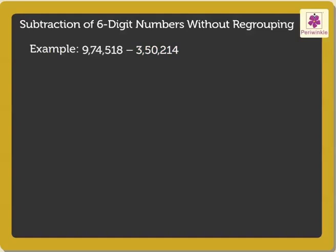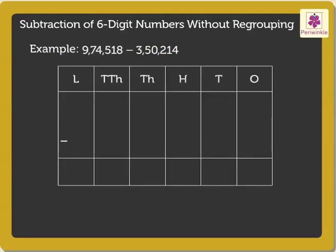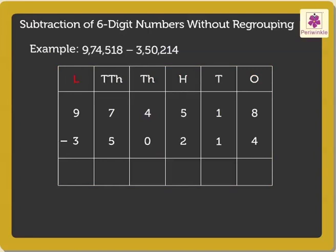Let us start. Write the numbers 9,74,518 and 3,50,214 in the place value chart — that is, in the 1s, 10s, 100s, 1000s, 10,000s and lakhs columns. Start by subtracting the numbers in the 1s column, and then the 10s and so on till we reach the lakhs column.